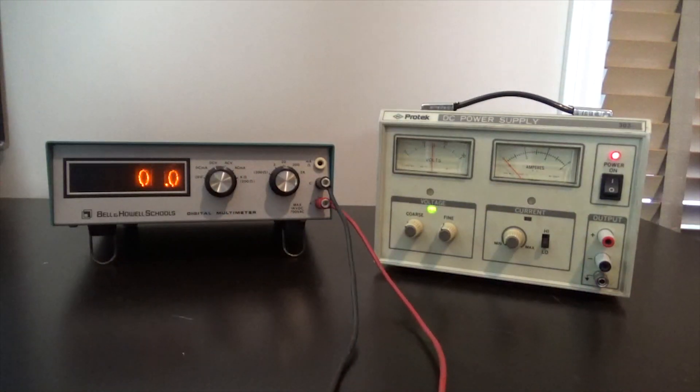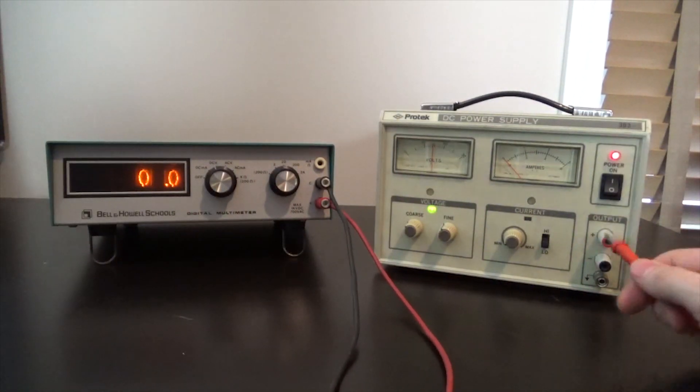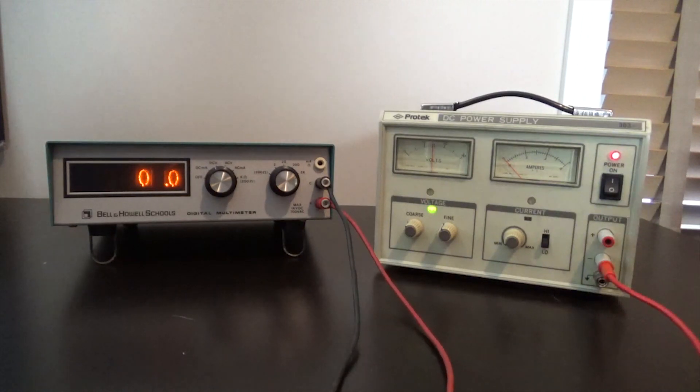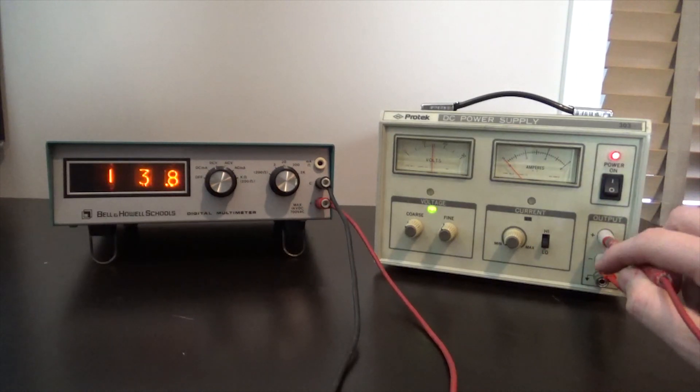So now let's hook up our Bell and Howell and see how close it is. You notice I'm going to be plugging a red banana clip into the negative. It's just because I don't have a black banana clip handy. 13.8 volts DC. All right, so we're about a solid one volt off. Not a big deal. We're going to calibrate that.